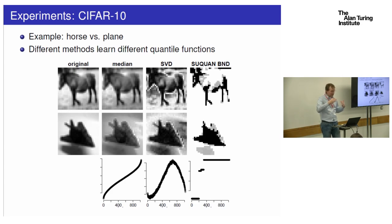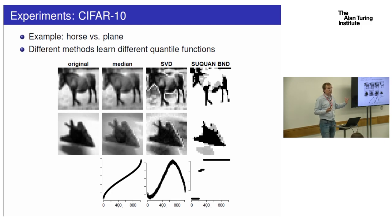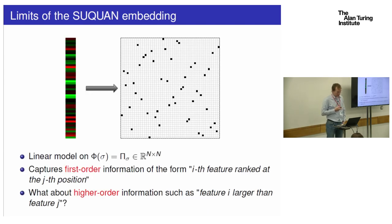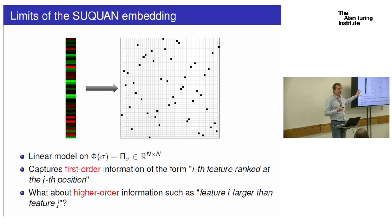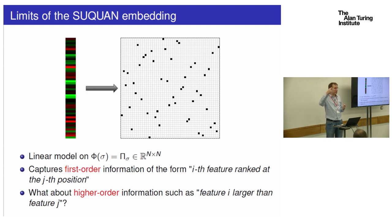This process was done in a fully supervised way to optimize the global task, which in this case was image classification. Maybe there are other opportunities for using such techniques to optimize a quantization protocol. But that's one possibility — Suquan, which is just the permutation representation. This one also has limitations: if you make linear models over that space, the set of features is poor because a single feature is 'item i ranked at position j.'